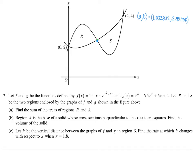That coordinate is right here, which makes sense. If this is 0 to 2, that looks about 1 over. And if this is from 0 to 4, it looks about 2.4. We need the interval to set up our integral. The area of R is going to be equal to the integral from 0 to the a value, which is 1.032832.